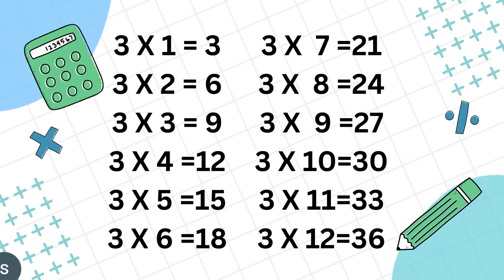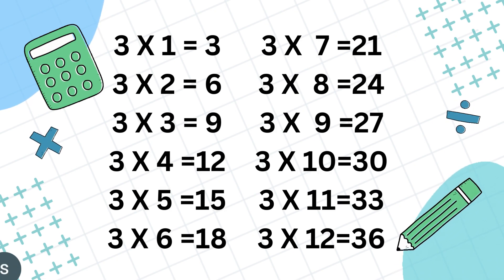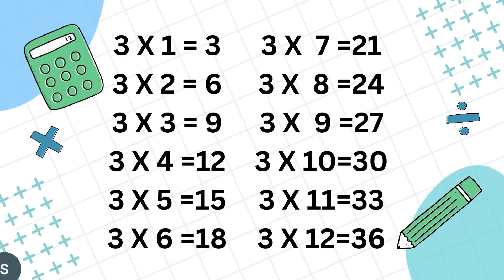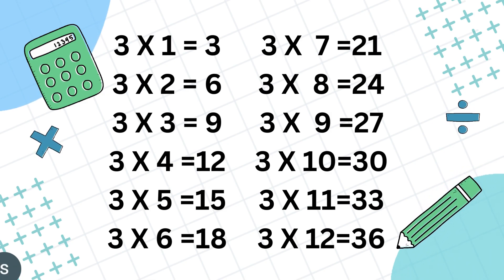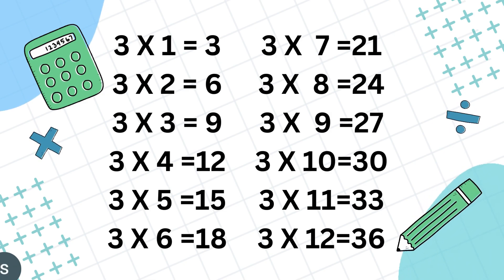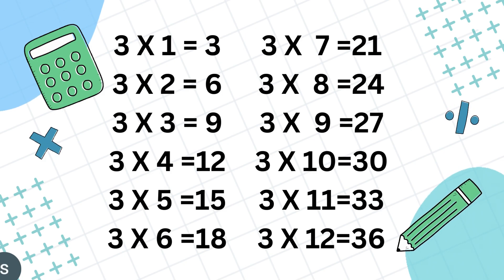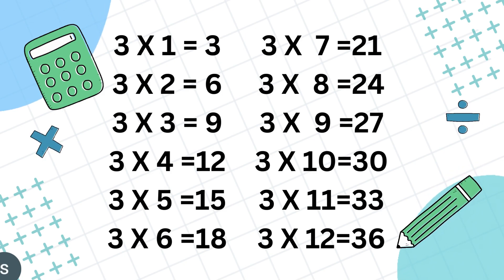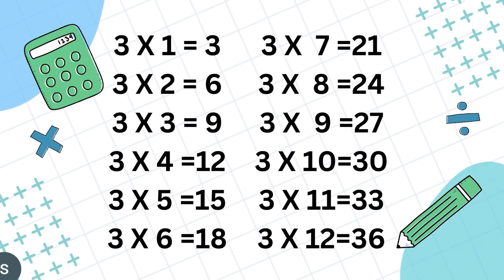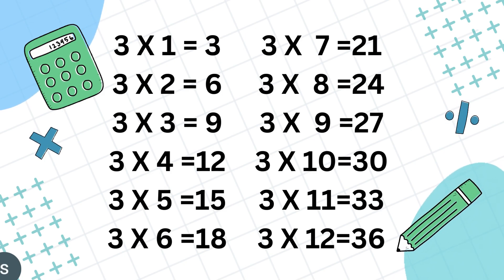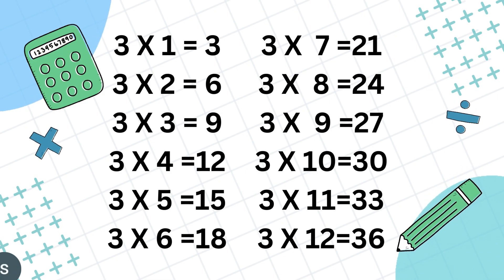3 7's are 21, 3 8's are 24, 3 9's are 27, 3 10's are 30, 3 11's are 33, 3 12's are 36.